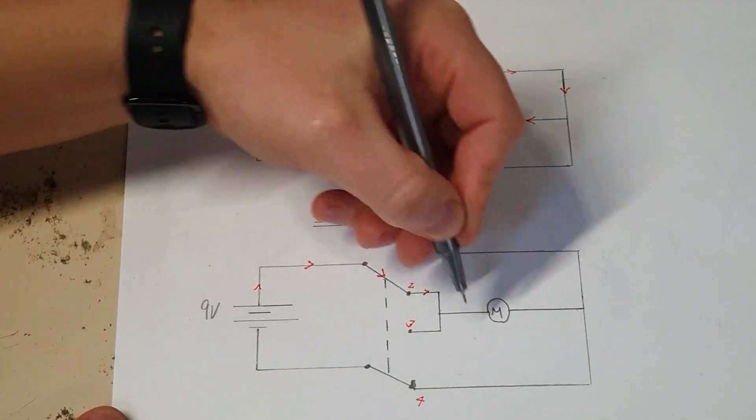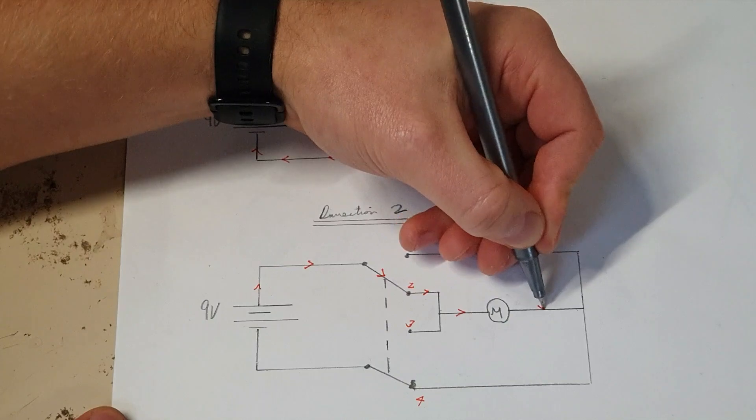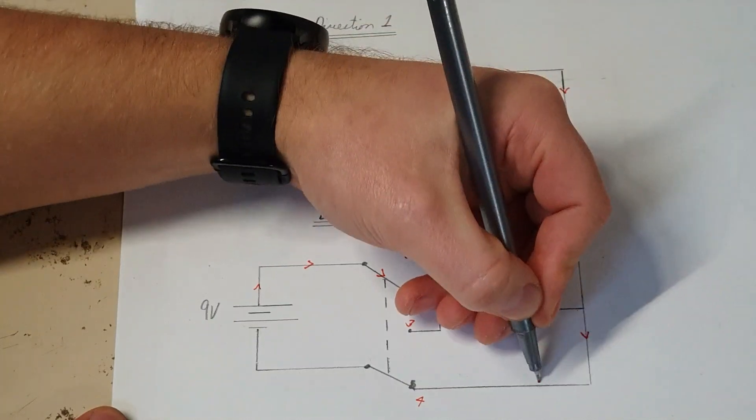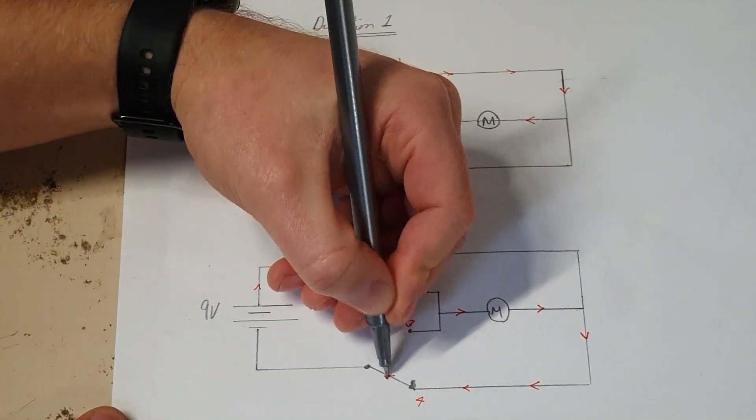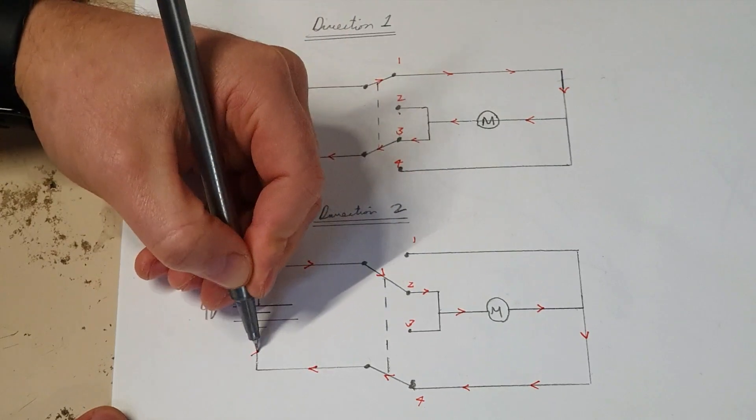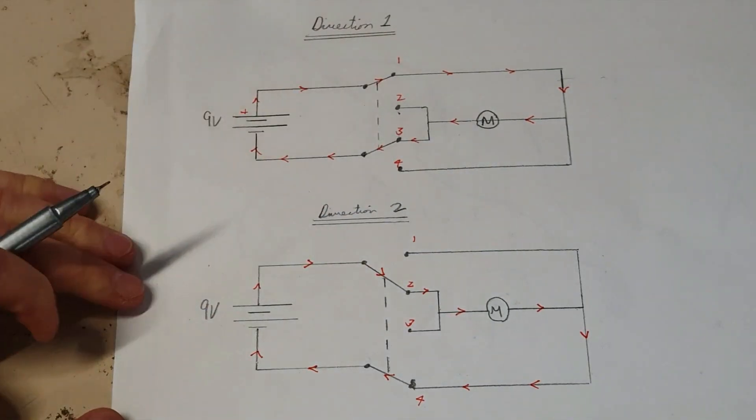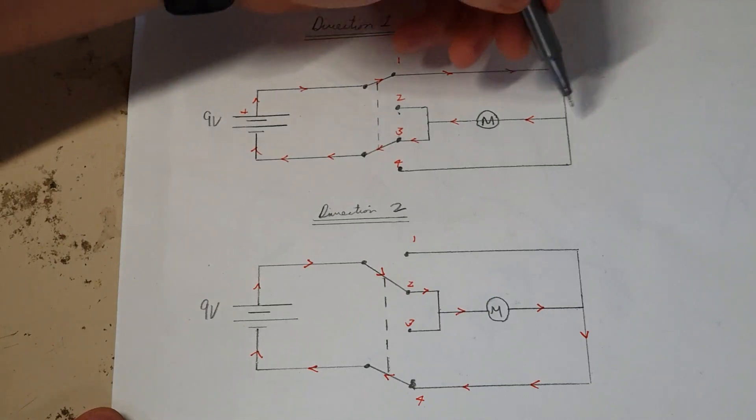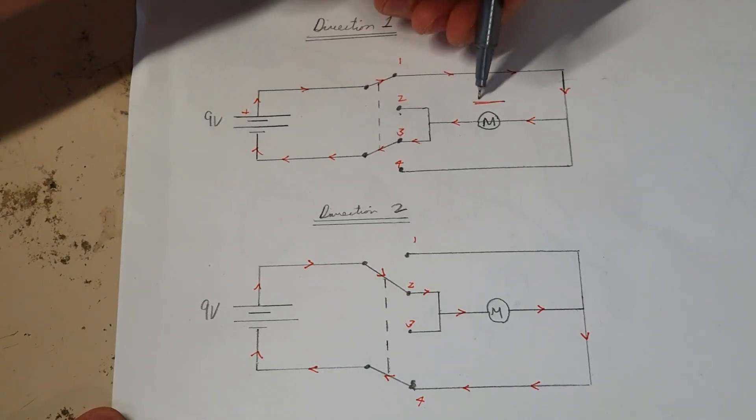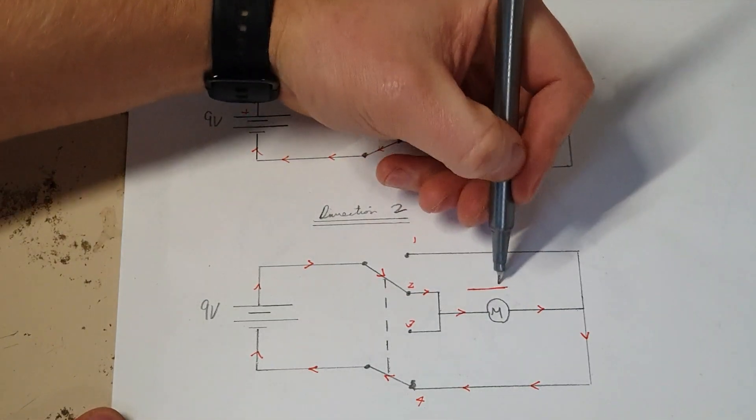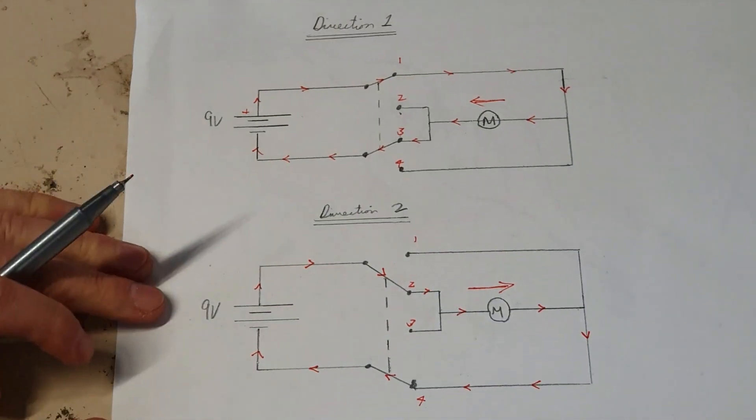This time it is going through the motor the opposite direction. So as we've seen from earlier on, when current flows through the motor in the opposite direction, it will go the other way. So again, it goes this way in this direction and it goes through the motor that way in that direction.